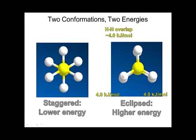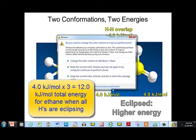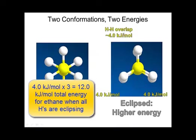In the eclipsed conformation, every hydrogen is overlapping — that costs energy. Each hydrogen-hydrogen overlap costs 4 kilojoules per mole: 4 here, 4 for this one, and 4 for this one, giving a total of 12 kilojoules per mole for this particular molecule.